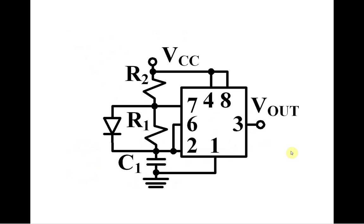Since charging path is through both R1 and R2 and discharging is through R1 only, duty cycle is always larger than 50%. In order to have any value for duty cycle from 0 to 100%, we need to add just one more diode.